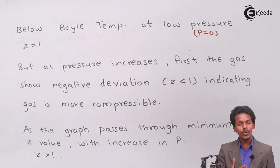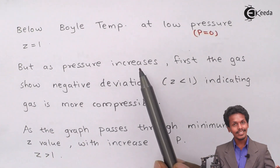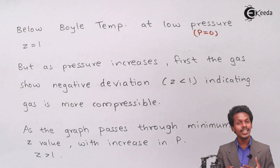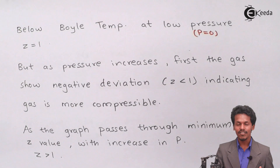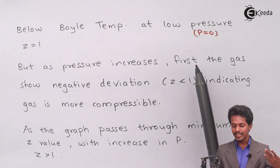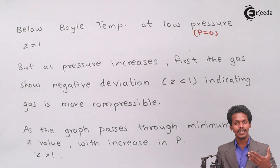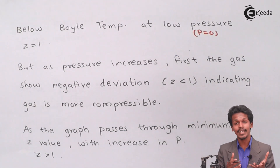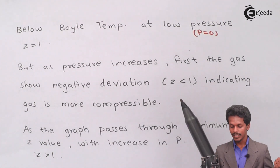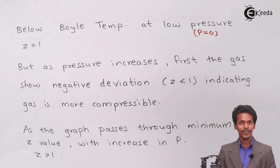Below the Boyle temperature, when Z is less than 1, as pressure increases, initially when the pressure is zero all gases behave ideally and the gas tends to compress at very low pressure. But as we increase the pressure, the gas first shows negative deviation — meaning the compressibility factor Z will be less than 1 — indicating the gas can be compressed and shows negative deviation, which means the gas is more compressible at that point.